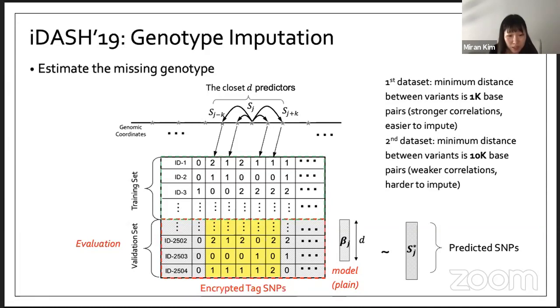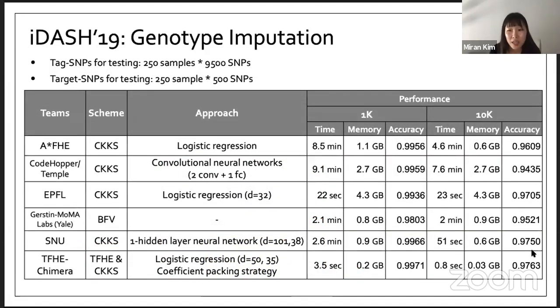In the testing phase, after they train the model, they encrypt the whole tag data and then predict the genotypes using the trained model with that encrypted tag genotypes. Make sure that the whole data is encrypted, but the model is given as plaintext, and we perform evaluation over encrypted data. The test data was 250 samples with 9,500 SNPs, and the target SNPs has the same number of samples but smaller SNP variants.